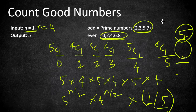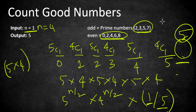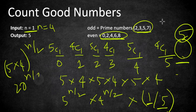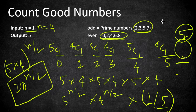Shortening the formula further, 5 × 4^(n/2) simplifies to 20^(n/2). So the solution you need to return is 20^(n/2), multiplied by an extra 5 if n is odd.